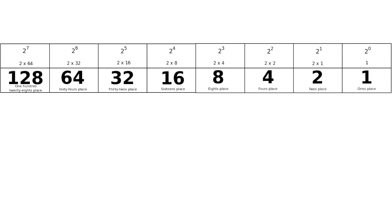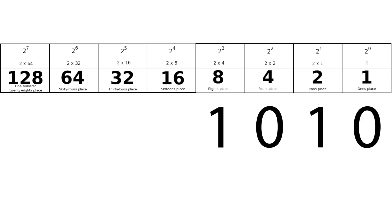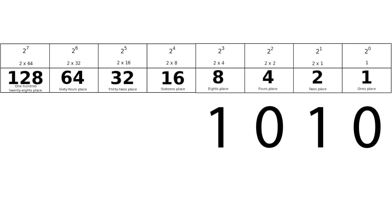In binary, or base 2, we only have 2 digits per place value — 0 and 1. The place values look like this. And you would count to 10 thusly: 0, 1, 2, 3, 4, 5, 6, 7, 8, 9, and 10. Instead of each new place value being a power of 10, binary place values are powers of 2. The same thing goes for hexadecimal — you just have 16 digits before you roll over.